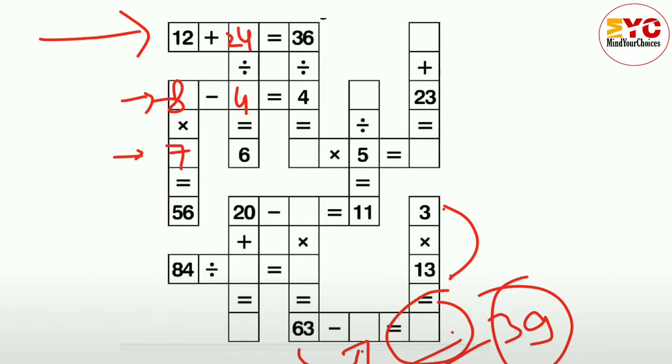Now to fill this one, 8 into which number is equal to 56? Definitely 7, 7 times 8 is 56. Now to fill this one, 36 divided by 4 is equal to 9. Now 9 into 5, we have to write here, 9 into 5 is 45.